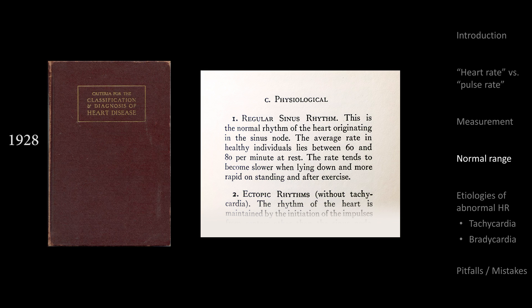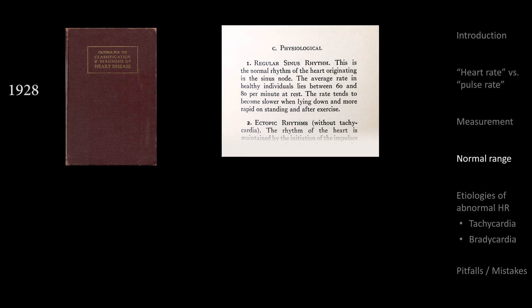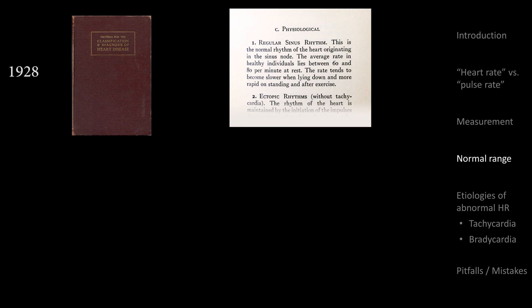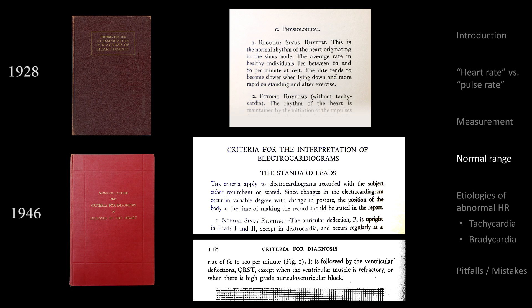The second and third editions of this book made no changes to the name or definition of regular sinus rhythm. However, in 1946, the newly reorganized New York Heart Association published the fourth edition of the book, now renamed Nomenclature and Criteria for Diagnosis of Diseases of the Heart. In this edition, regular sinus rhythm was renamed Normal Sinus Rhythm and given a range of 60 to 100, with wording that felt more like specific criteria than previously.